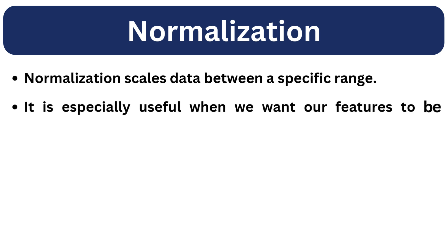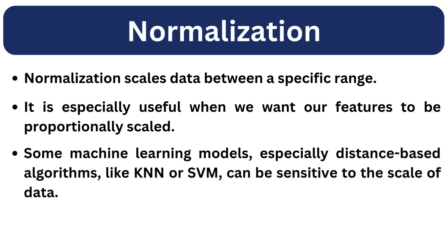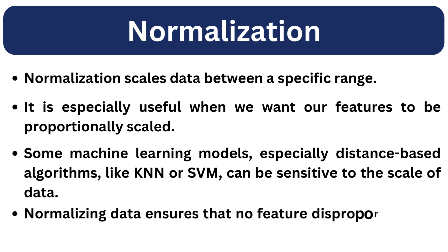Let's start with normalization. Normalization scales the data between a specific range. It is especially useful when we want our features to be proportionally scaled. Some machine learning models, especially distance-based algorithms like KNN or SVM, can be sensitive to the scale of the data. Normalizing data ensures that no feature disproportionately influences the results just because it has larger numbers.